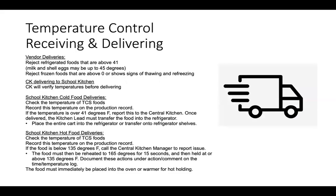Receiving and Delivering. It is important to be aware of the quality of all food that we receive into our kitchens. Do not assume that the food we receive is held to our standards without checking first. When receiving items from vendors or outside companies, reject refrigerated foods that are held above 41 degrees. Milk and shell eggs may be up to 45 degrees. Reject frozen foods that are above zero or show signs of thawing and refreezing. When central kitchen delivers food to the school kitchens, the central kitchen will verify temperatures before delivering. Upon receipt at school kitchens, cold food deliveries must be checked. Record the temperature on the production record. If the temperature is over 41 degrees, immediately report this to the central kitchen.